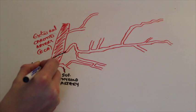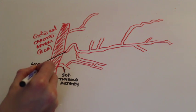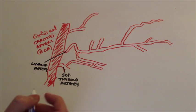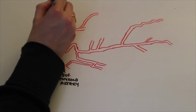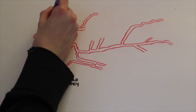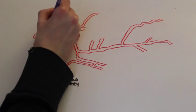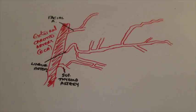This is one we're interested in as it's the main supply of the tongue. The third artery it gives off is the facial artery. It's important to know that the lingual artery comes off between the superior thyroid artery and the facial artery.